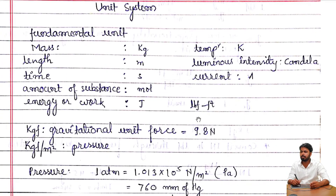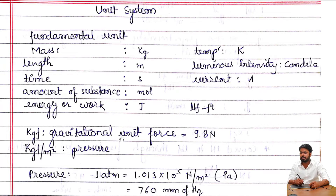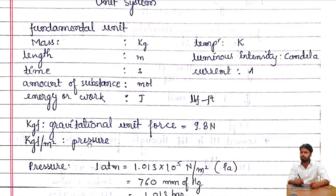Now we go into the introduction part — the unit system. The fundamental units are: mass in kg, length in meter, time in second, amount of substance in mol, and energy or work in joule. kgf is a gravitational unit of force equal to 9.8 Newton. kgf per meter square is given as a pressure unit.